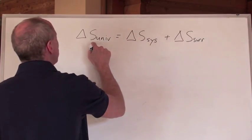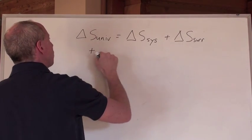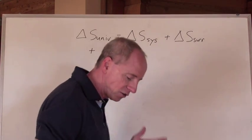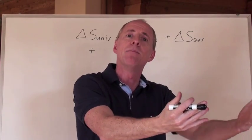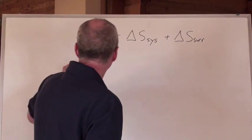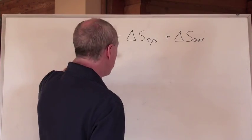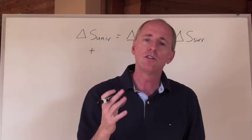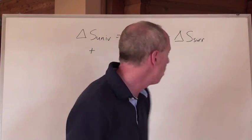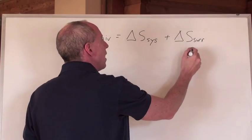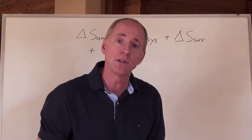The entropy of the universe, if it is increasing in a process, that means that the process is spontaneous. A spontaneous process makes a positive entropy increase or a randomness increase in the universe. But it's dependent on two things: it's dependent upon what the system is doing and how that affects the surroundings as well.